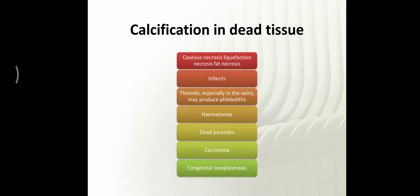After the death of parasites, especially in a hydatid cyst caused by Echinococcus granulosus, when the parasite dies inside, there is deposition of calcium over the dead parasite. This is another example of dystrophic calcification. Calcification also occurs in some cancerous conditions like breast cancer.